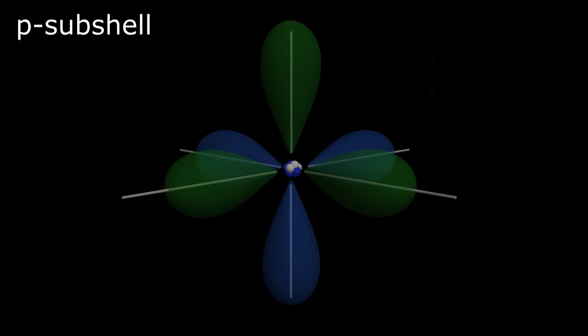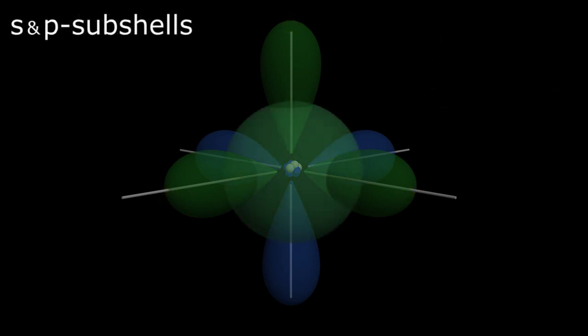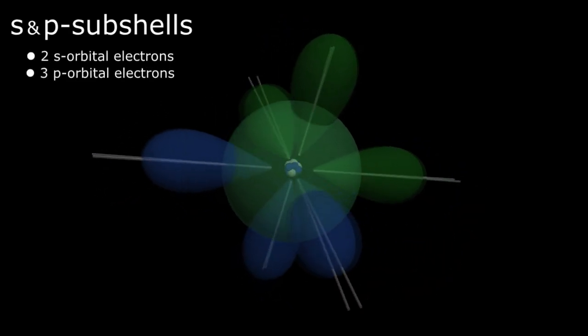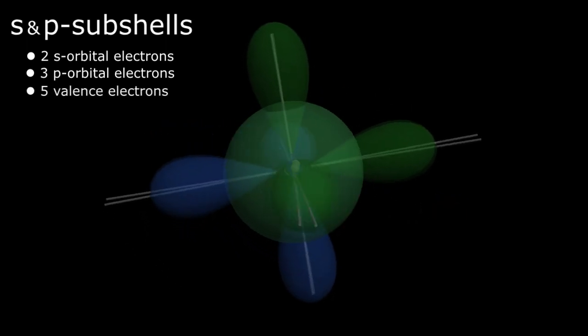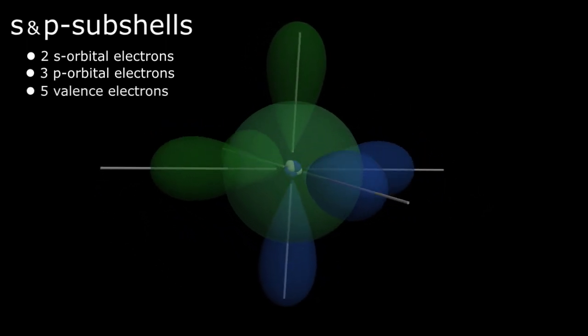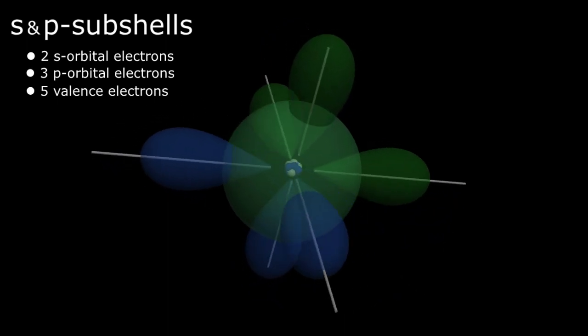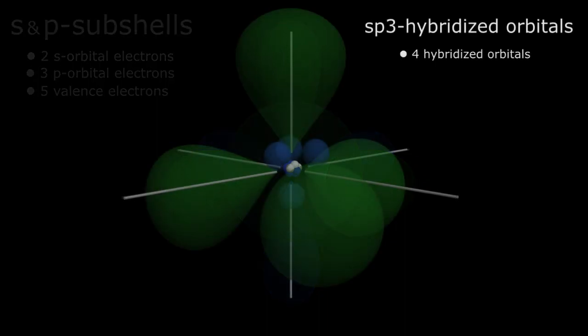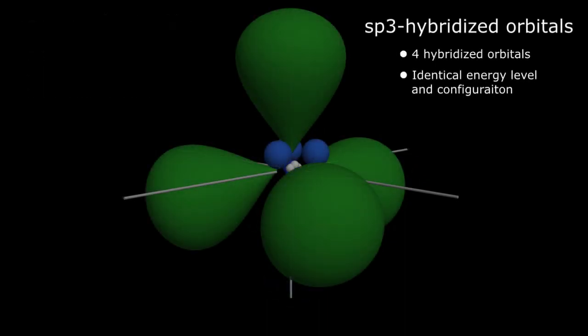Now let's superimpose our S subshell with its single orbital and two electrons on our P subshell with its three orbitals, each containing a single electron for nitrogen's total of five valence electrons. Since, in the second shell, the S and P orbitals have similar energies, they can actually combine into four hybridized SP3 orbitals, all of which have an identical energy level.